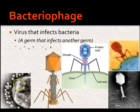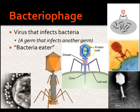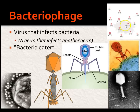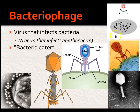It's a germ that infects another germ — a bacteria eater. It infects the cell, injects its DNA, and that DNA takes over and contains instructions for making more bacteriophage, then it pops out and explodes to make more, to infect more.